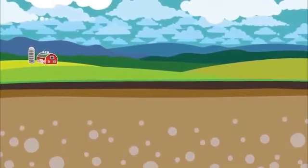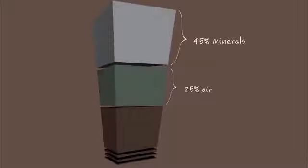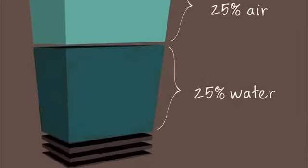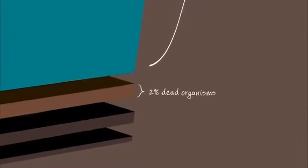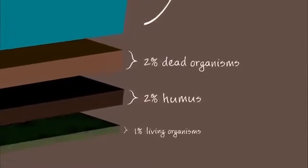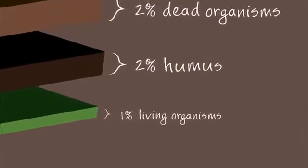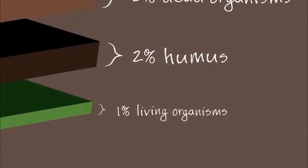If we analyze the topsoil from this sample of farmland, we find that it is comprised of approximately 45% minerals, 50% air and water, 2% plant and animal remains, 2% humus, and less than 1% living organisms, such as bacteria, fungi, and insects.